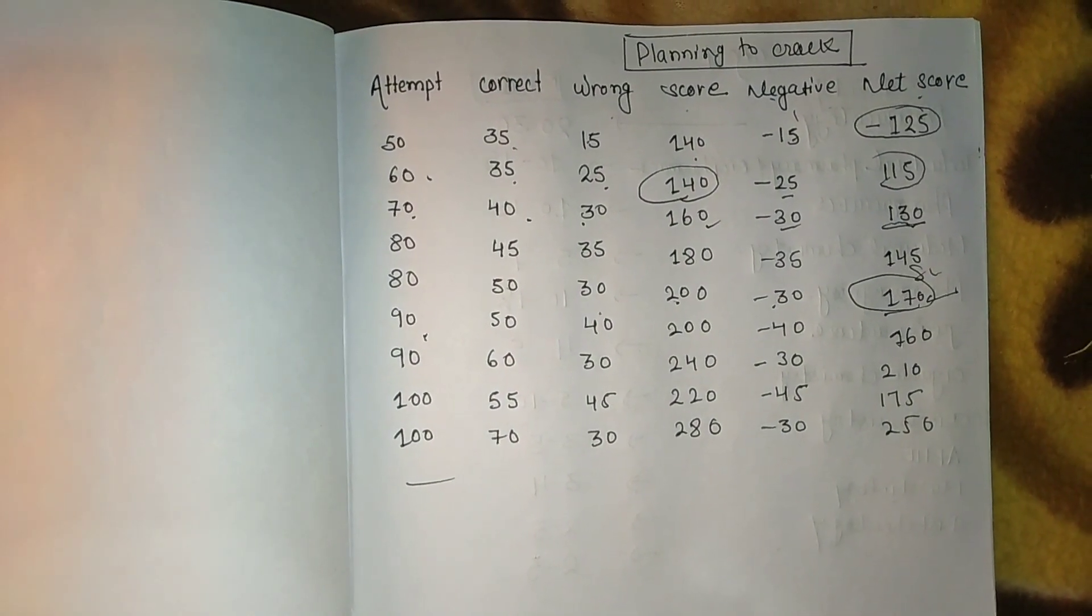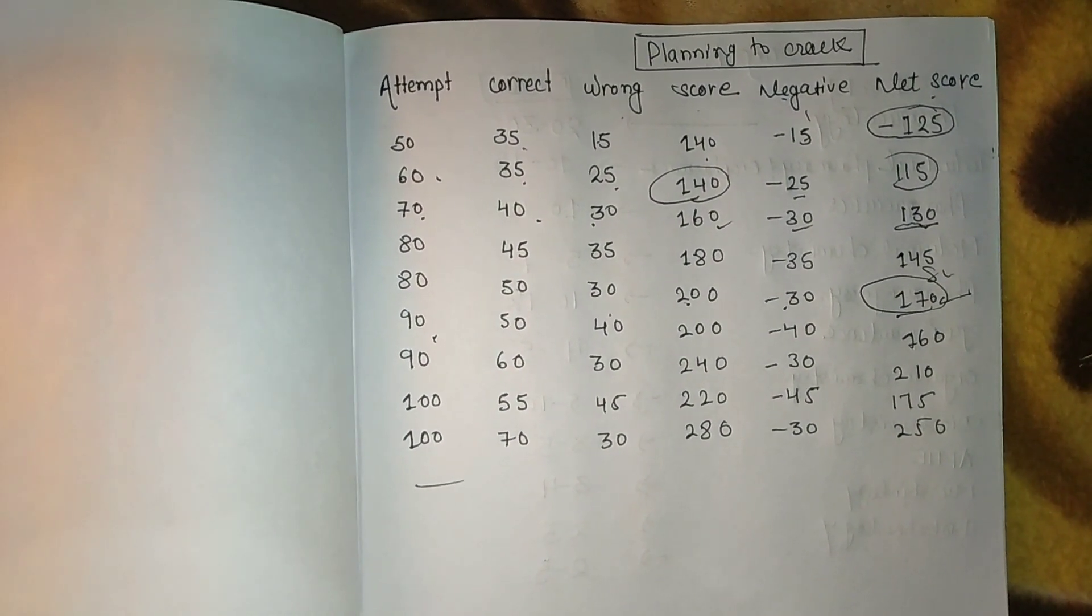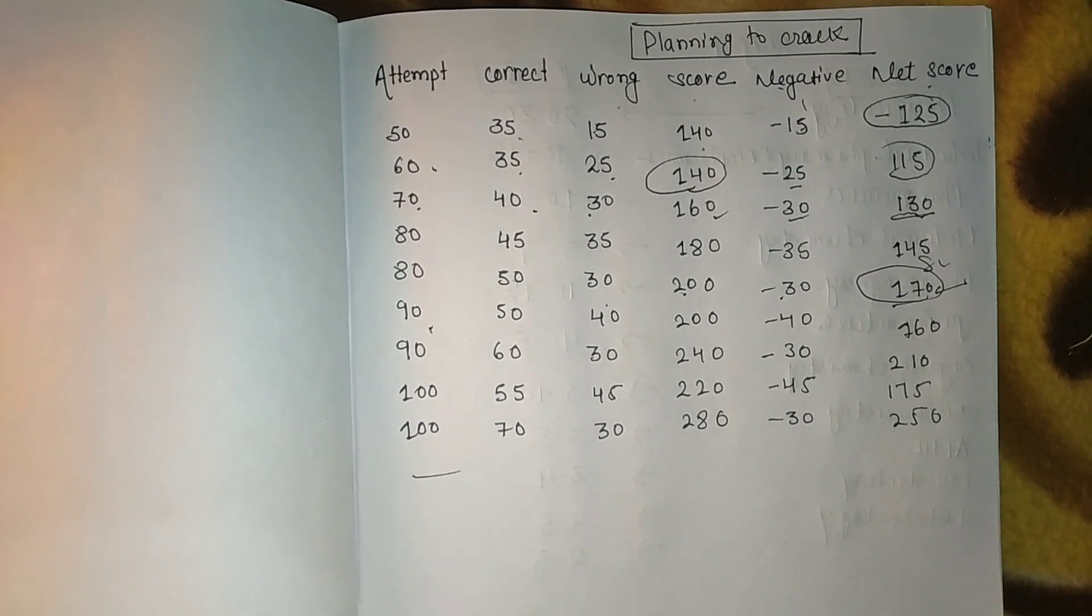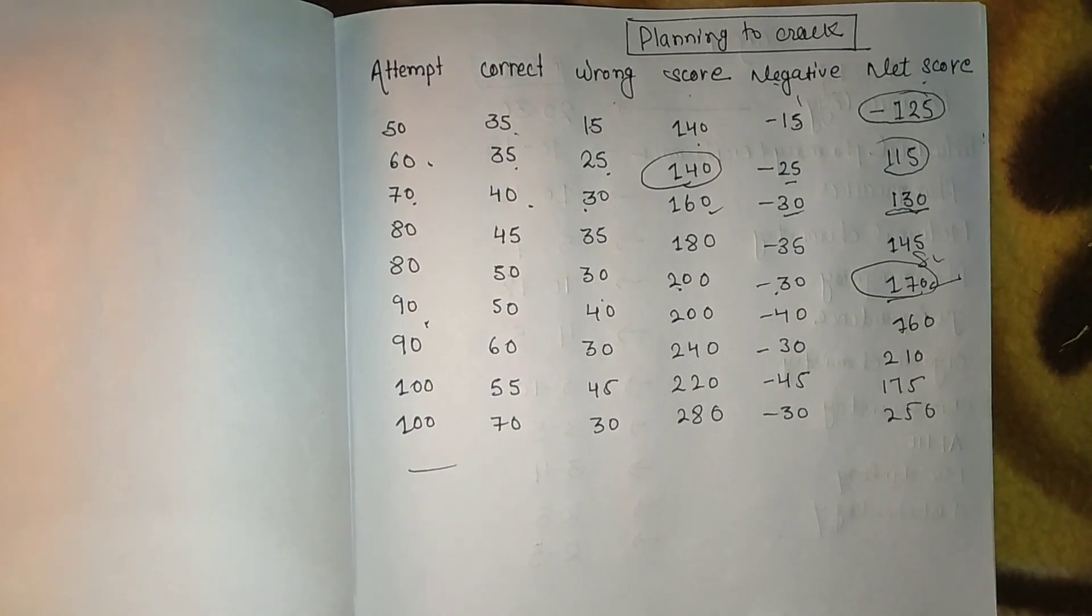Another strategy for 100 question attempt: 70 correct, 30 wrong. Your score is 280 minus 30, net score is 250, which is the highest score.